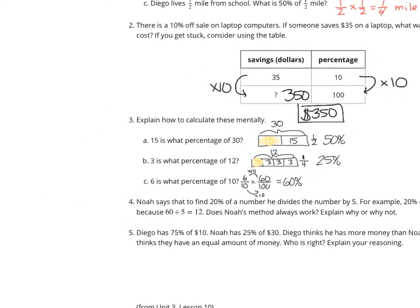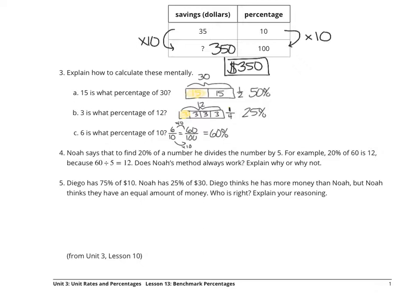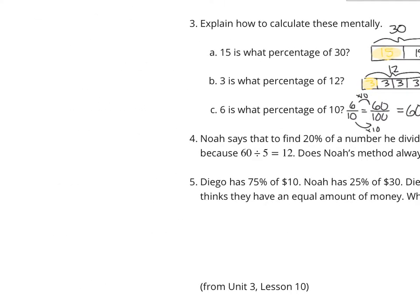As we look at our next question, Noah says that to find 20% of a number, he divides the number by 5. For example, 20% of 60 is 12, because 60 divided by 5 equals 12. Does Noah's method always work? Explain why or why not. Well, if we look at 20% as a fraction, that's 20 over 100. If I simplify that down, divide by 10, that's 2/10, divide by 2, that's 1/5.